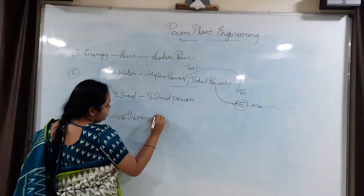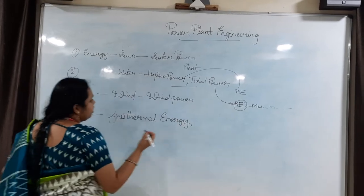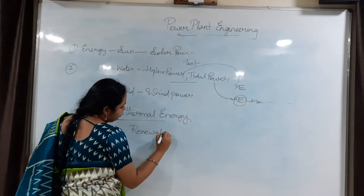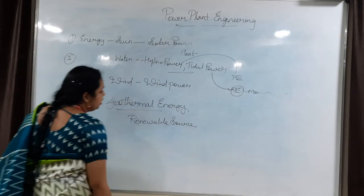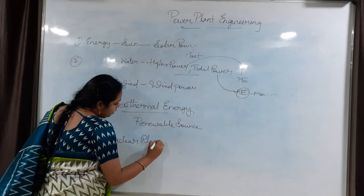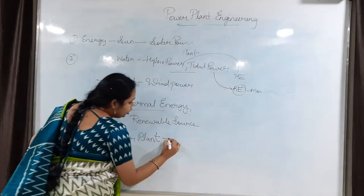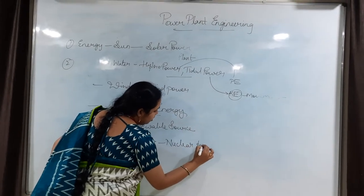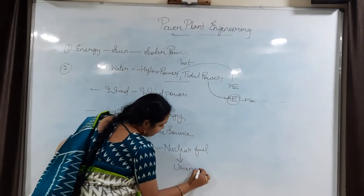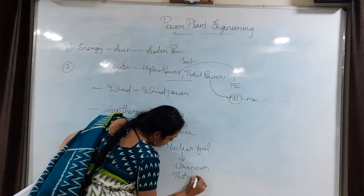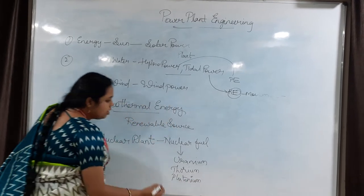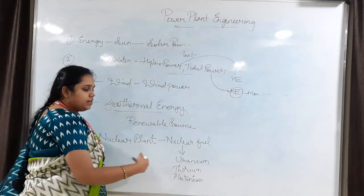Geothermal energy is another form of energy and comes under renewable sources. Coming to nuclear plant — electricity produced by using nuclear fuel is called a nuclear power plant. Nuclear fuels include uranium, thorium, and plutonium. By using these fuels, we generate nuclear energy through chain reactions, and from that, electricity is generated.